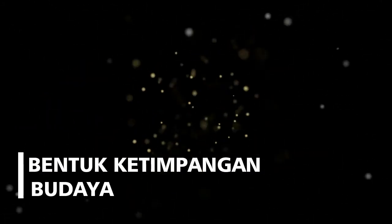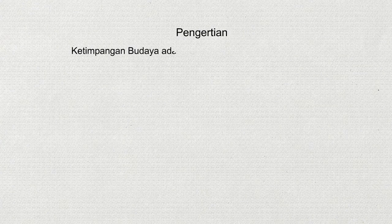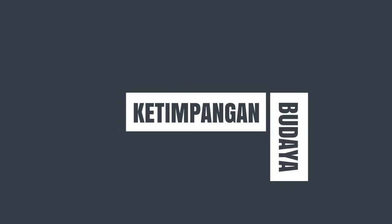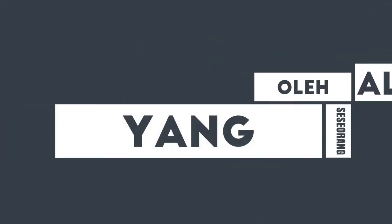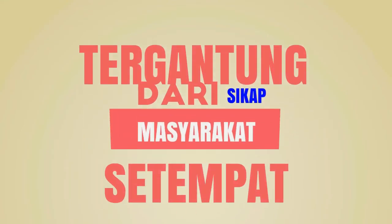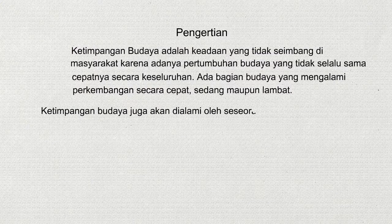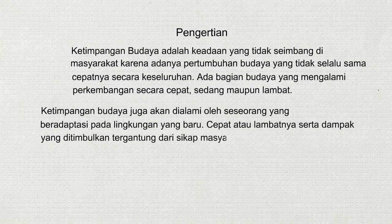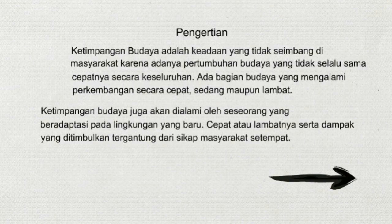Bentuk ketimpangan budaya. Ketimpangan budaya adalah keadaan yang tidak seimbang di masyarakat karena adanya pertumbuhan budaya yang tidak selalu sama cepatnya secara keseluruhan. Ada bagian budaya yang mengalami perkembangan secara cepat, sedang, maupun lambat. Ketimpangan budaya juga akan dialami oleh seseorang yang beradaptasi pada lingkungan yang baru. Cepat atau lambatnya serta dampak yang ditimbulkan tergantung dari sikap masyarakat setempat.